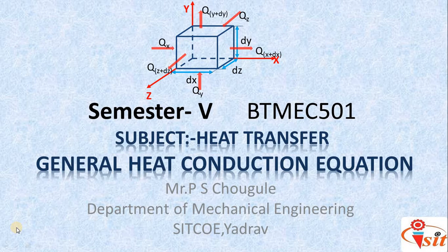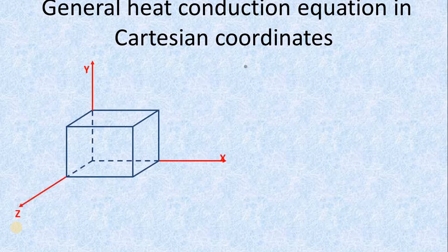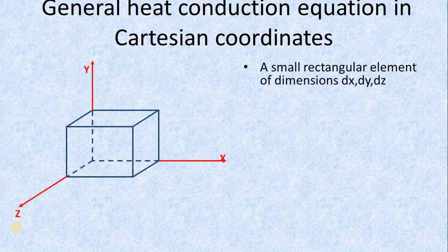In this lecture, we will derive the equation for Cartesian coordinates only. For that, let us consider one element having the dimensions dx, dy, and dz. Here are the axes x, y, and z. You can take z here and y here also. This is the small rectangular element.